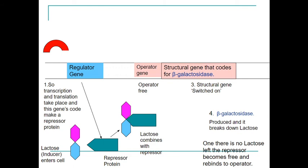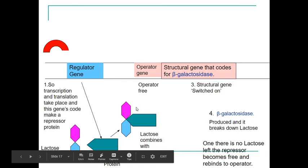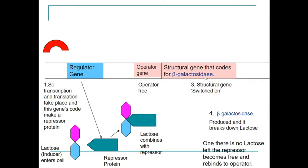When there is no more lactose left, the repressor will become free from the lactose and will rebind to the operator so that transcription and translation of beta-galactosidase cannot take place, again saving energy.